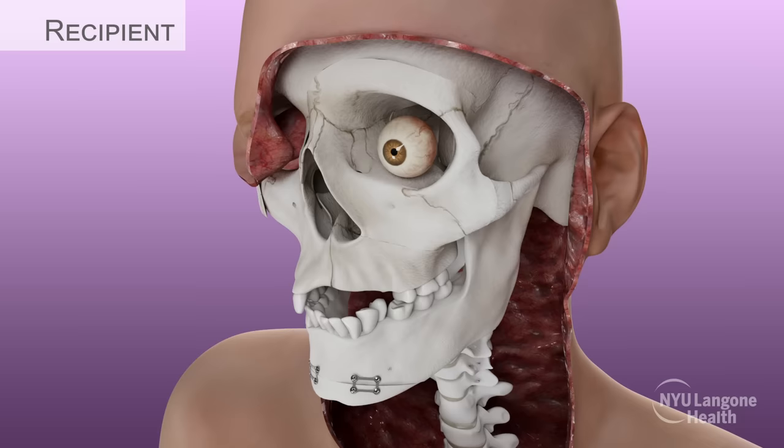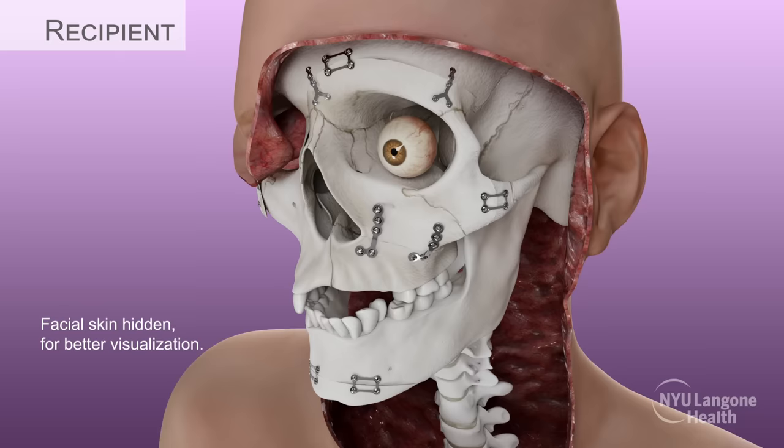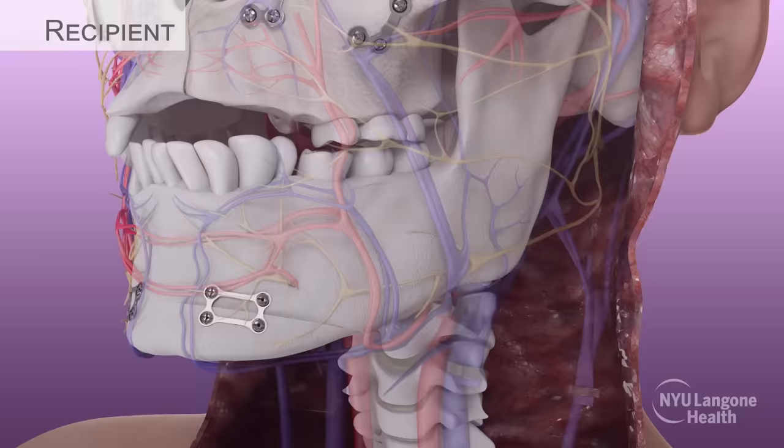The donor mid-face and orbital zygomatic bony subunits were then affixed to those of the recipient using low-profile titanium plates and screws, confirming anatomic replacement of all bony subunits and fixation into the appropriate positions.